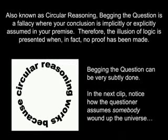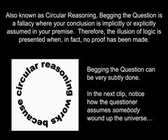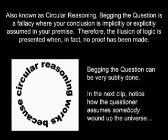Begging the Question. Also known as circular reasoning, begging the question is a fallacy where your conclusion is implicitly or explicitly assumed in your premise. Therefore, the illusion of logic is presented when in fact no proof has been made. Begging the question can be very subtly done. In the next clip, notice how the questioner assumes somebody wound up the universe.